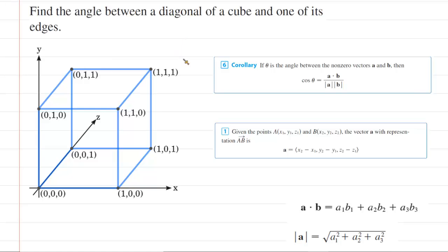In order to find the angle between a diagonal of a cube and one of its edges, the first thing we're going to do is draw a picture. We've decided to use the unit cube, although any cube would suffice. The unit cube is a cube whose edge lengths are all equal to one, and we have the lower left corner situated at the origin.